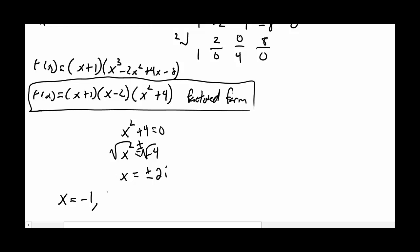One solution was at negative 1. One was at a positive 2, and then we have plus or minus 2i.